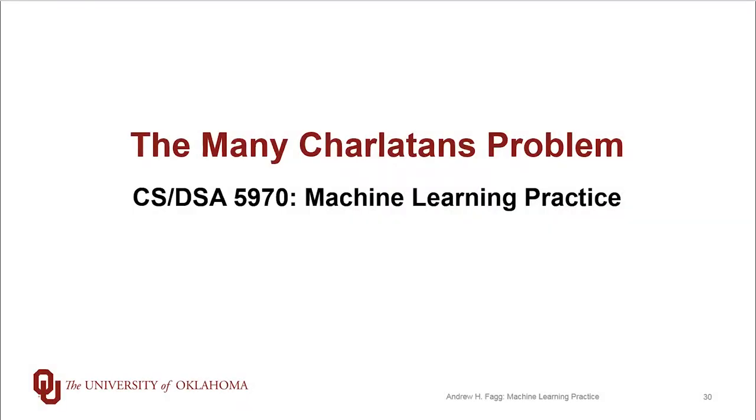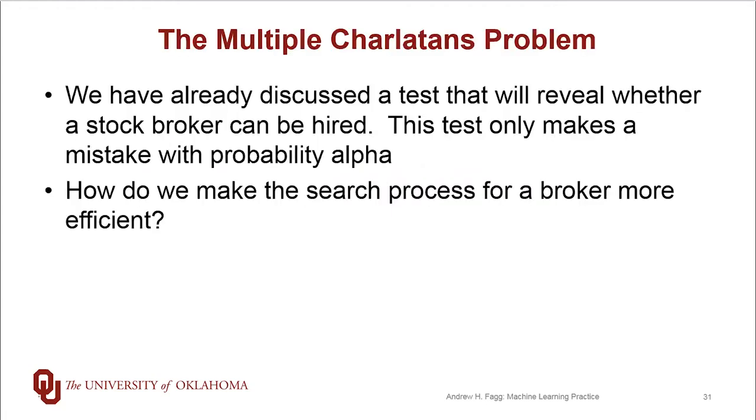All right, we've talked about the single charlatan issue, and now it's time to move on to the multiple problems. So that single charlatan question was the problem of setting up a test that tells us whether or not we should be able to hire a stockbroker. And in particular, the takeaway there is that this test will make mistakes with some probability, and that's a controllable probability.